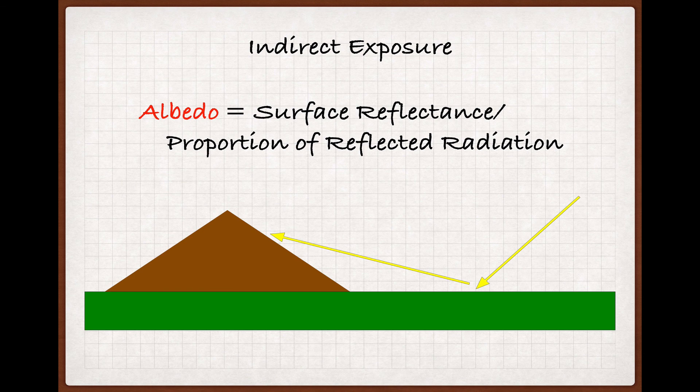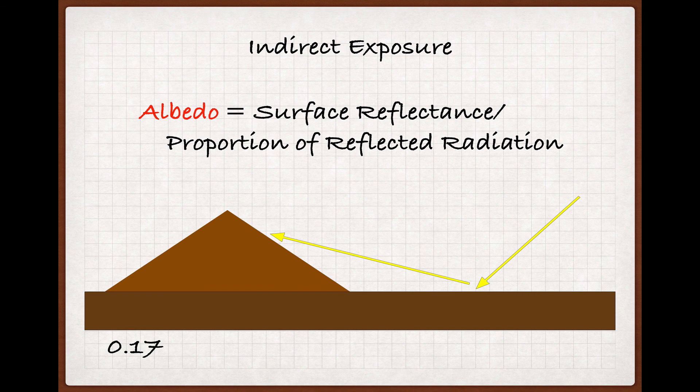Albedo represents a proportion of radiant energy that's reflected from the ground and is measured on a scale between 0, representing no reflected energy at all, and 1, representing a reflection of all energy. The lighter a surface appears, the higher its albedo. So while most dark soils have a low albedo of about 0.17,